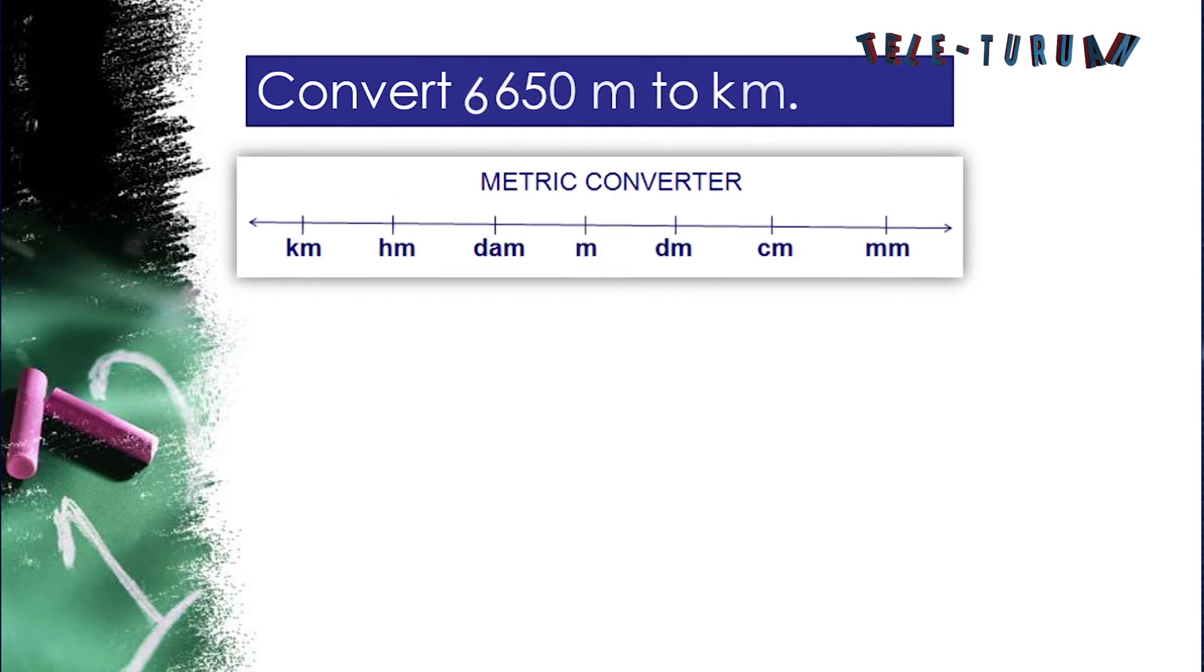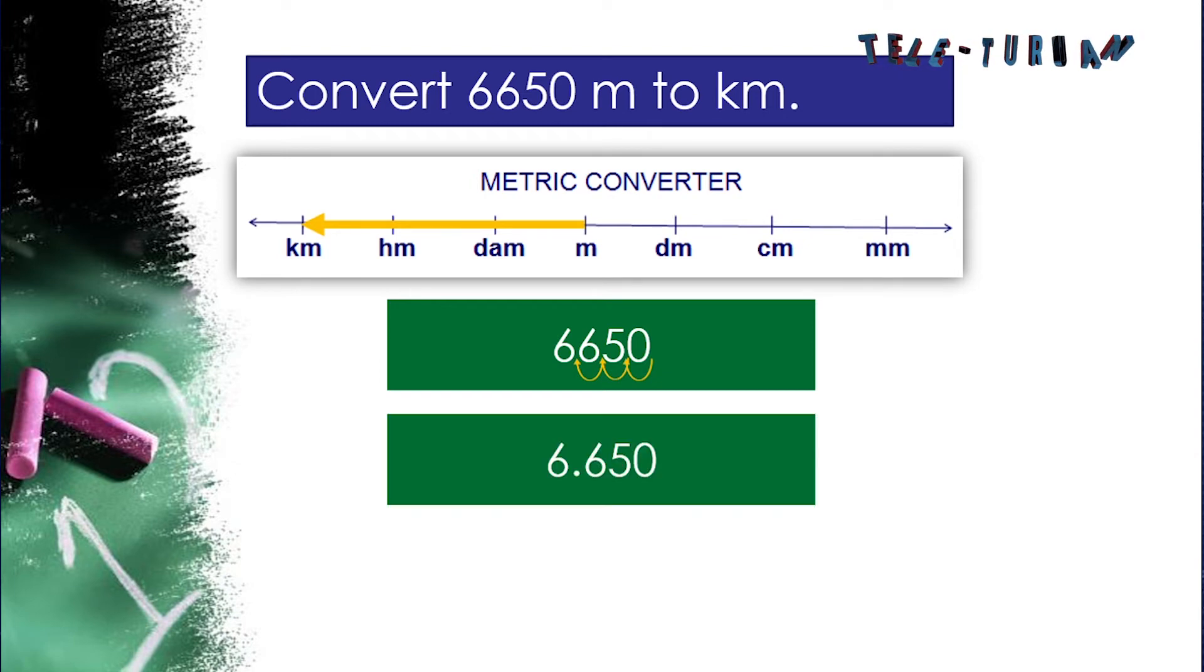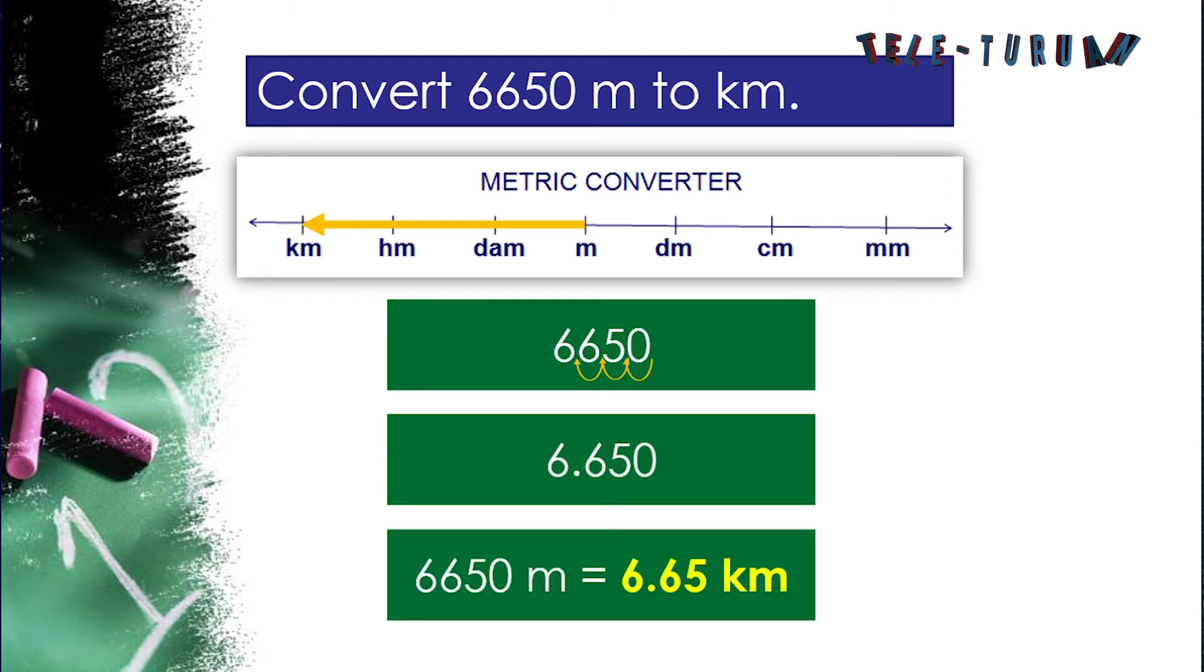For our next example, convert 6,650 meters to kilometers. Since meter and kilometers are metric units, we shall use the metric converter. All we have to do is move the decimal point of 6,650 to the left by 3 units. Now we have 6,650 meters is equal to 6.65 kilometers.